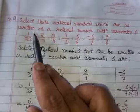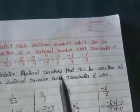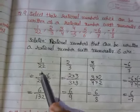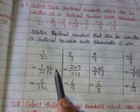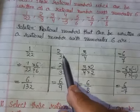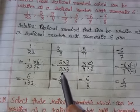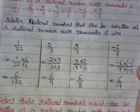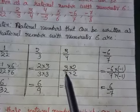Question 9: select rational numbers which can be written with numerator 6. For 1/22, multiply by 6/6 to get 6/132 — numerator is 6. For 2/3, multiply 2 by 3 and 3 by 3: gives 6/9, and numerator is 6.